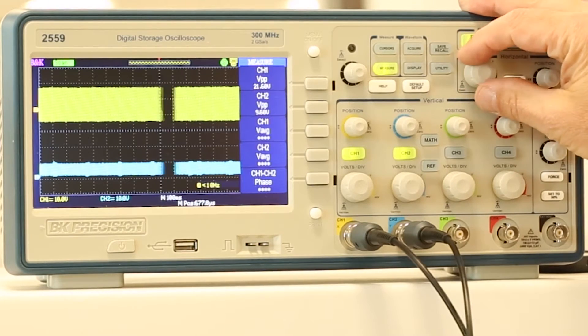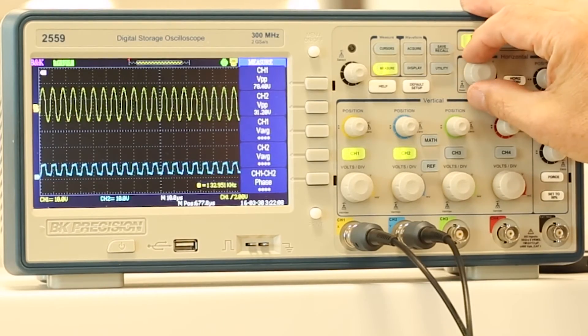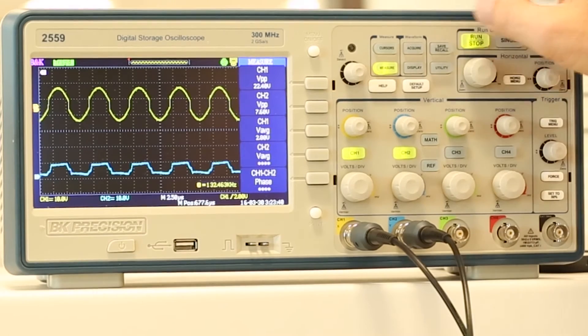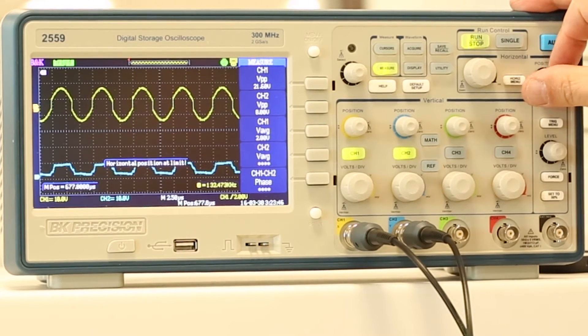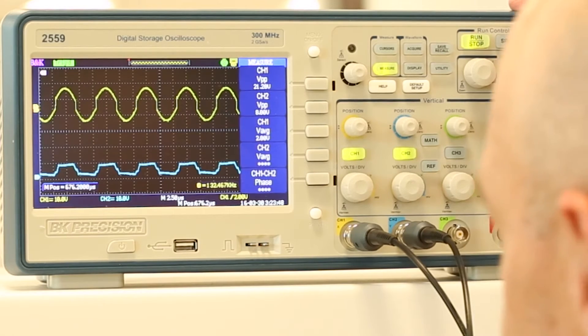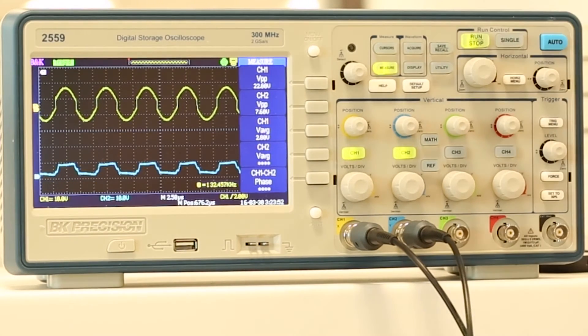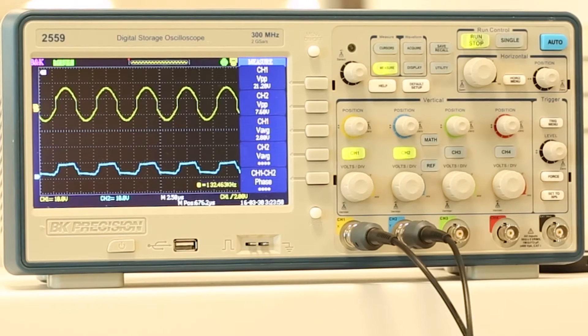As we can see now on the scope, power is now being transmitted. Time based on the scope is set to 2.5 microseconds per division. We can see that the period is about three divisions, so that means 7.5 microseconds. Take the inverse of 7.5 microseconds and you have about 130 kilohertz.